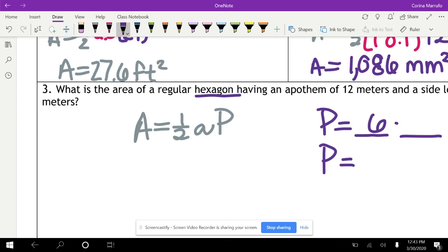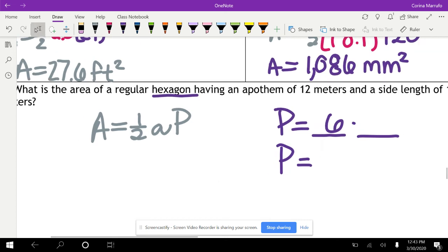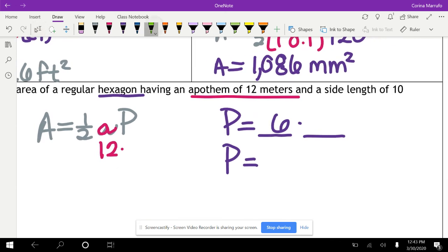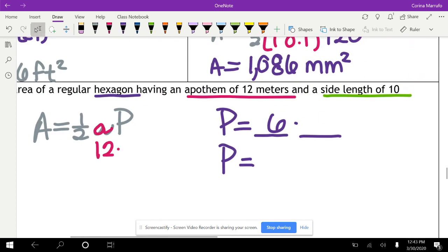And then they also tell us that the apothem is 12 meters. So here, instead of little a, we are going to plug in a 12 times. And then it tells you that the side length of our hexagon is 10 meters. So I'm going to put 10, and that's what we need to find the perimeter. So we're going to do six times 10. Six times 10 gives us 60. So that means that the perimeter of our hexagon is 60 meters.